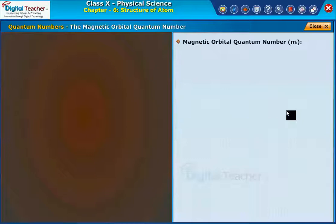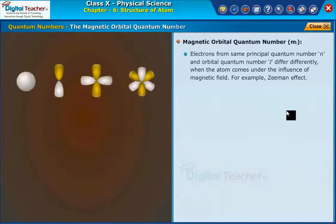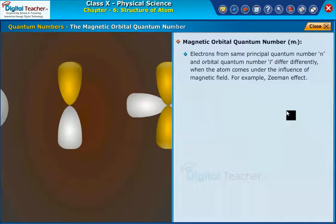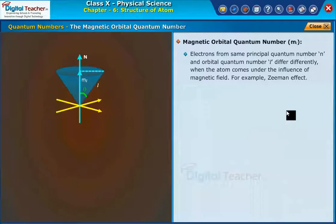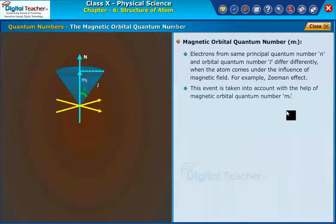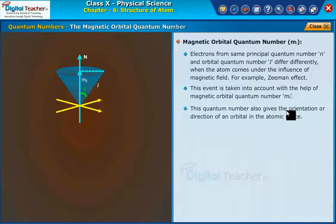Magnetic orbital quantum number. Electrons from same principal quantum number n and orbital quantum number l differ differently when the atom comes under the influence of magnetic field. For example, Zeeman effect. This event is taken into account with the help of magnetic orbital quantum number m_l.